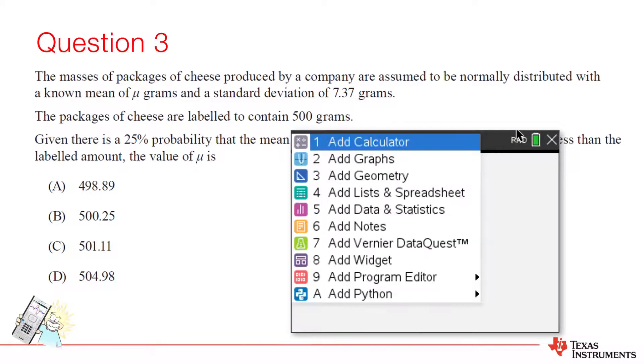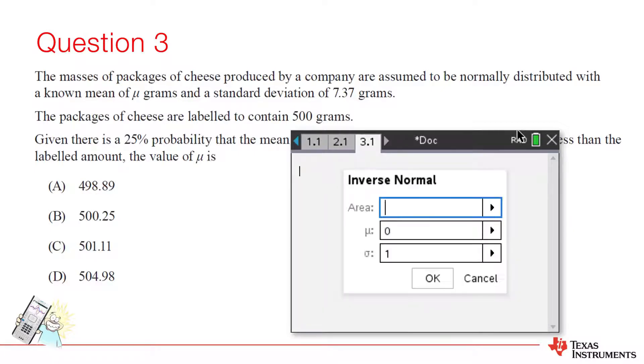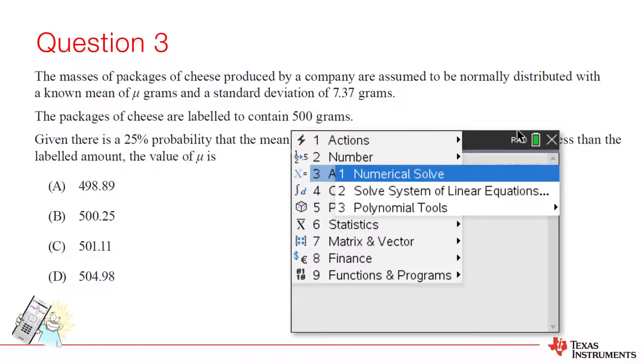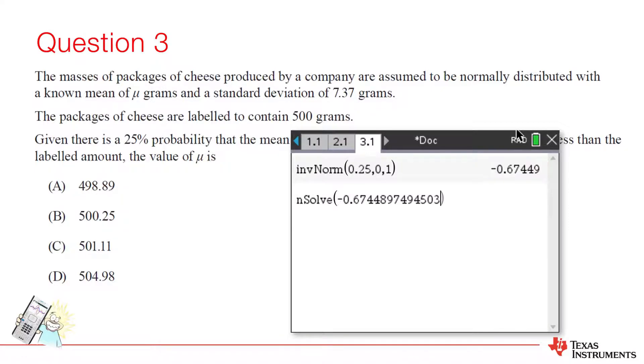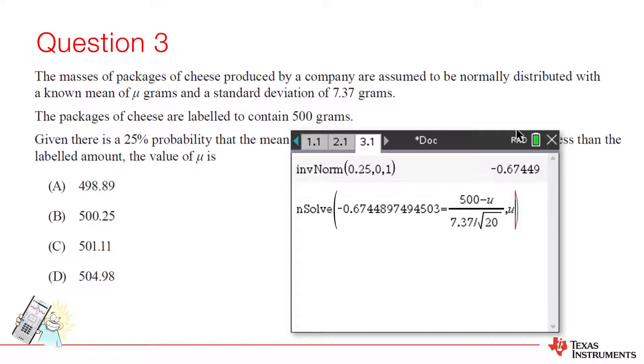We can use the inverse normal distribution. I'll use the standard normal. The probability or area is 0.25, the mean is 0, and the standard deviation is 1. Now we know the required z-score. We can use solve for the mean. We can use the standard deviation to find μ equals 501.1, which is option C.